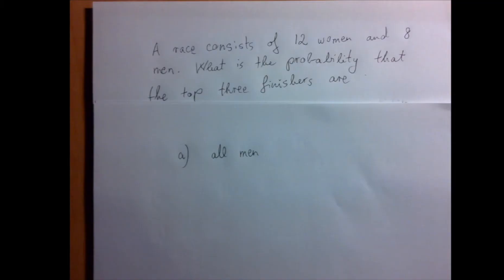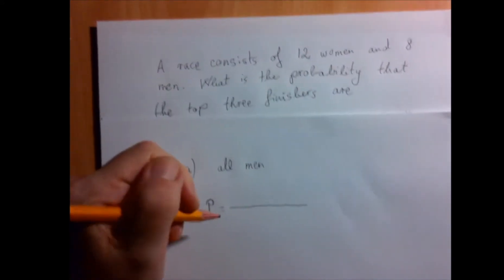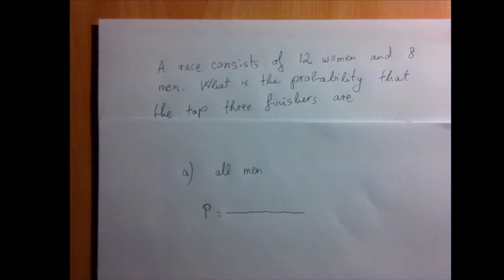This is a classic example of why a probability theory problem is really two counting problems, because the probability is how many out of how many. So the denominator will be the total number of outcomes, how many outcomes are possible.